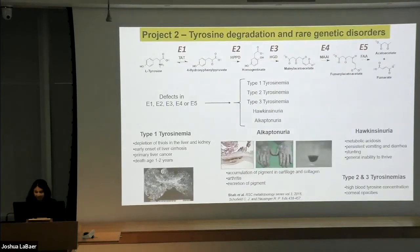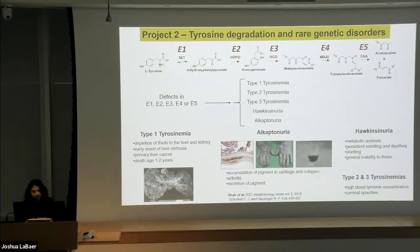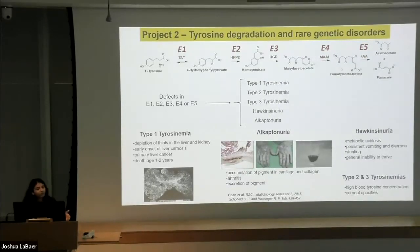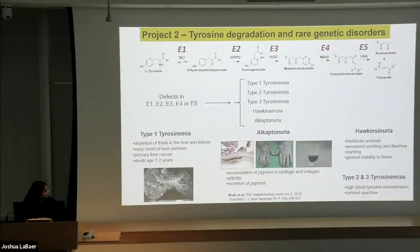The second project I briefly mentioned is tyrosine degradation, which is correlated with genetic disorders or metabolic disorders. The tyrosine degradation pathway has five steps involved in breaking down this amino acid, each catalyzed by a unique enzyme labeled B1 through B5. If there are defects in any of these enzymes, five different disorders can occur: type 1, 2, and 3 tyrosinemia, alkaptonuria, and hawkinsinuria.